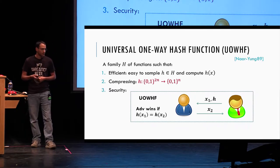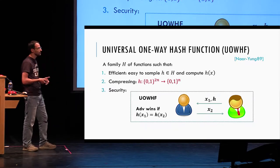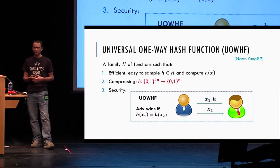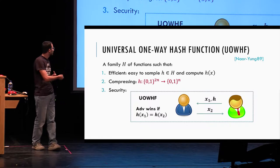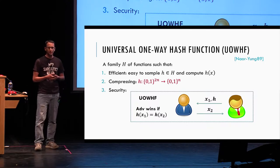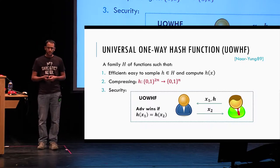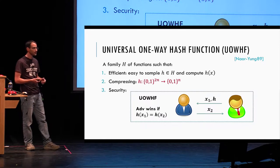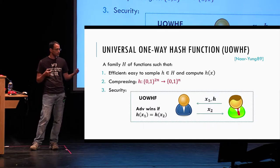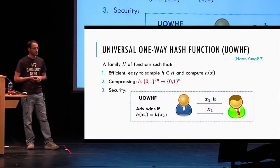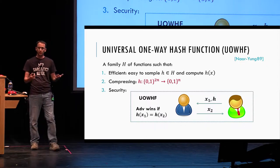What is a universal one-way hash function, introduced by Naor and Yung? The setting is the same family of efficient compressing hash functions, but the security game is different. The challenger picks h and also picks a random element x1. The adversary's goal is to find x2, different from x1, that collides under h. This is a harder task for the adversary — he cannot control x1, he gets x1 and can only control x2. Because the task is harder, this is actually a weaker primitive, a weaker security notion.